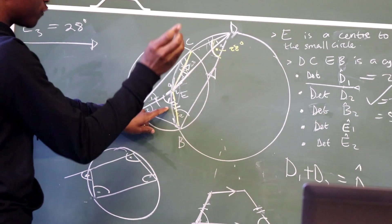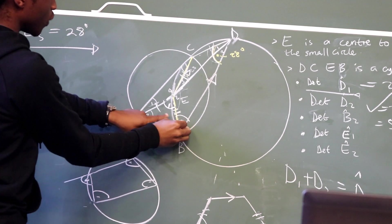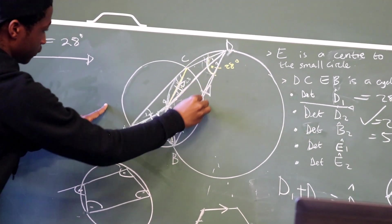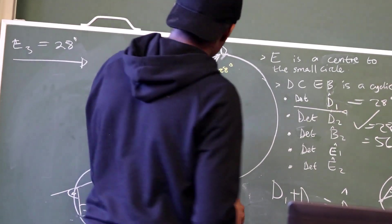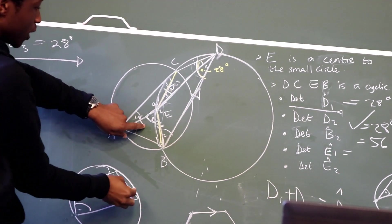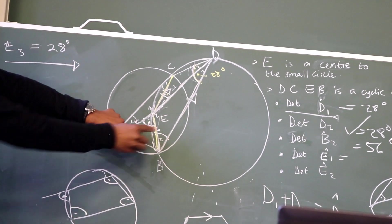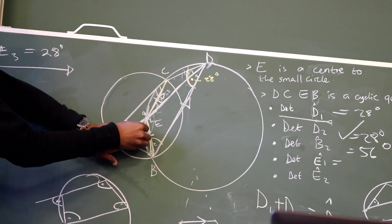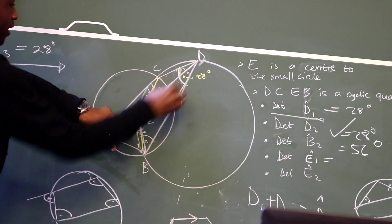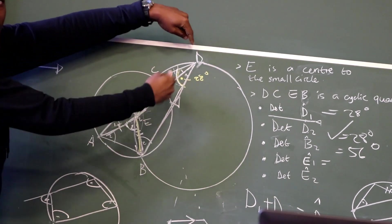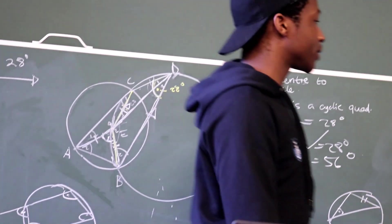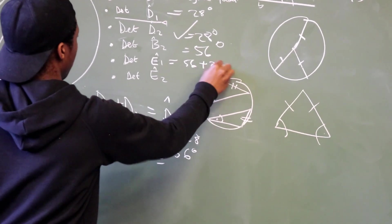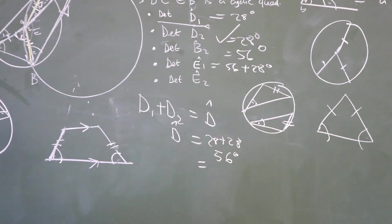Given that we proved that D2 is 28 and B2 is 56, we can now determine this angle because of these triangles that were given here. Meaning E1 would be equal to 28 plus B2, which is 56. Why do we say 28 plus 56? It's because D2 and B2 are two opposite interior angles. This is the triangle. And then, we say that sum of the two opposite interior are equal to the exterior angle of the triangle. Meaning E1 is going to be 56 plus 28 degrees, which equals 84 degrees.